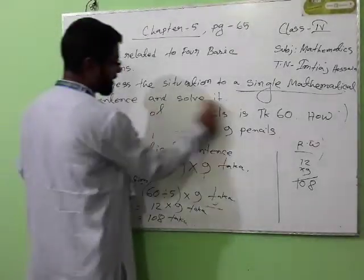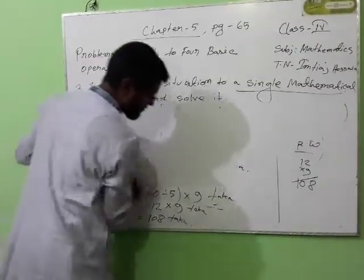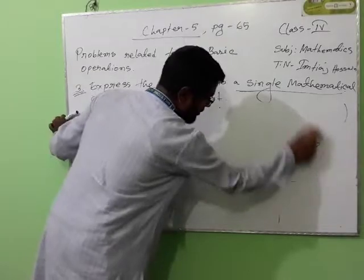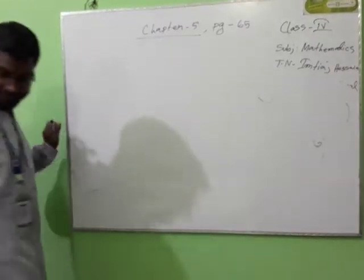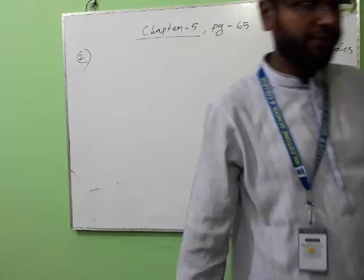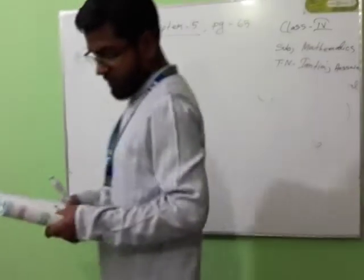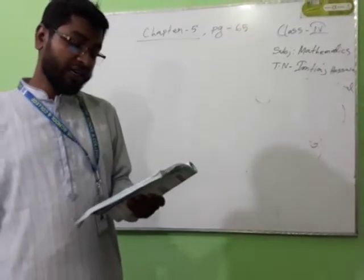Express the situation in a single mathematical sentence — keep it in your mind. This is the solution using calculation order. If you solve it like this way, the math will be all right. Have you understood? Now the very, very important math. Number 2. Please read number 2. Divisor is 3 times the remainder. And the quotient is 4 times the divisor. Remainder is 2. What is the dividend?